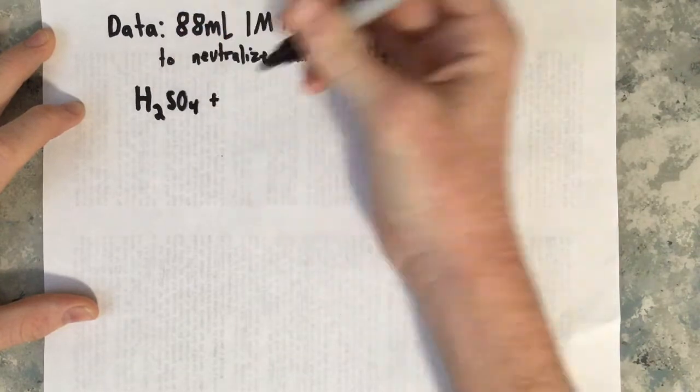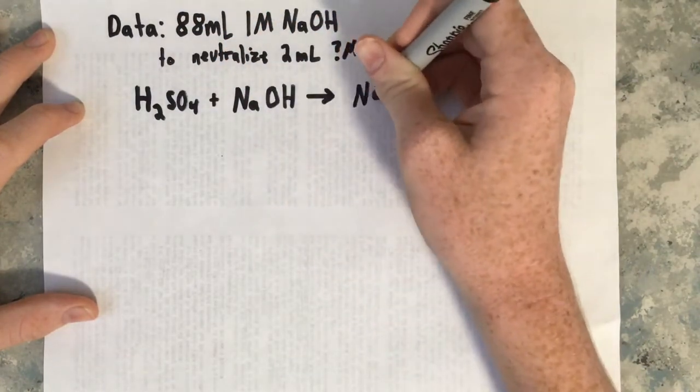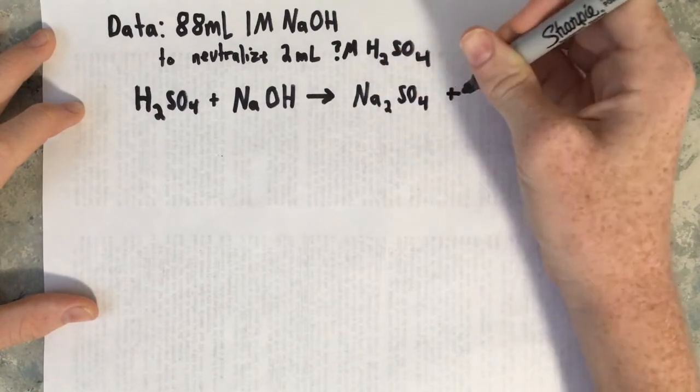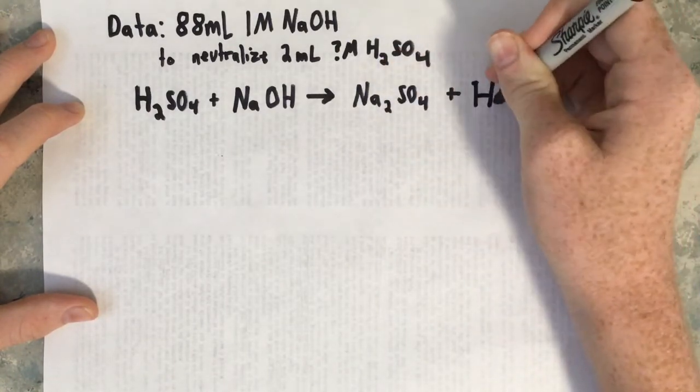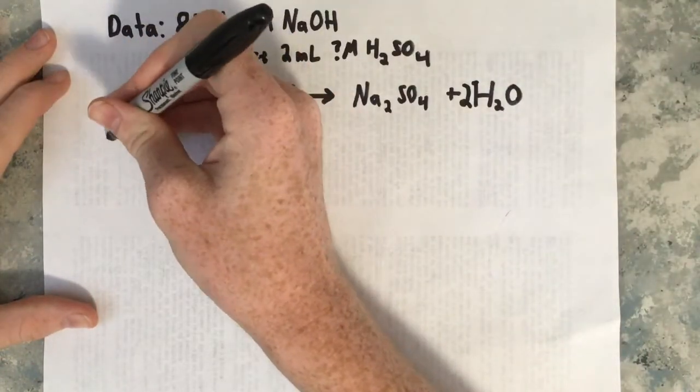The first thing we need to do to figure out the concentration is write out sulfuric acid's reaction with sodium hydroxide. When sulfuric acid is reacted with sodium hydroxide in a one to two molar ratio, it forms sodium sulfate and water.